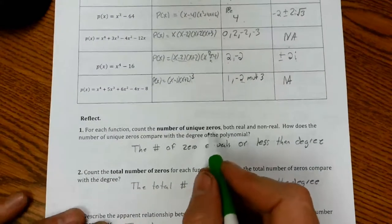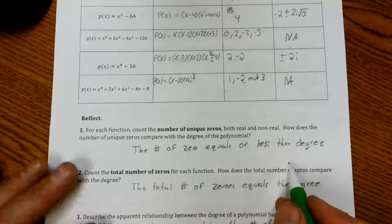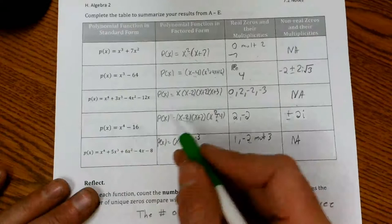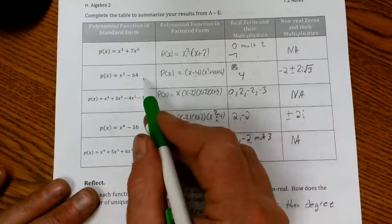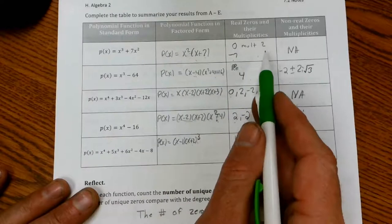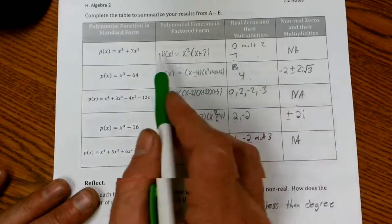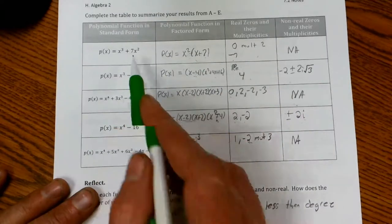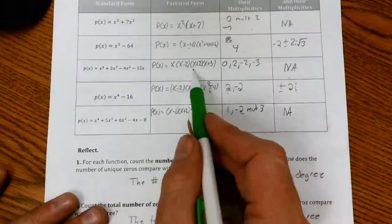So my unique zeros here were three even though this one occurred twice, which is less than that degree. My unique zeros here are three which is the same as. My unique zeros here are zero and negative seven, which is less than that degree.